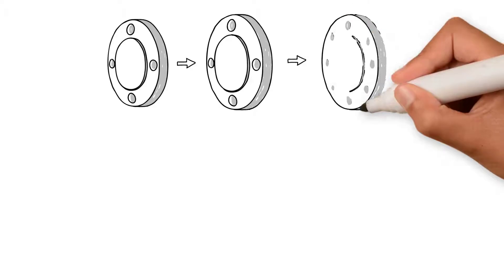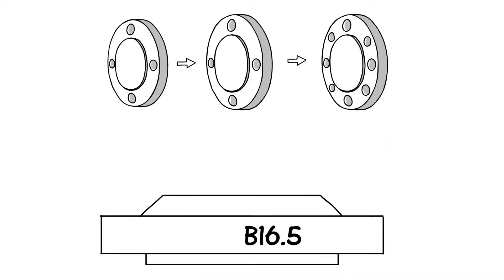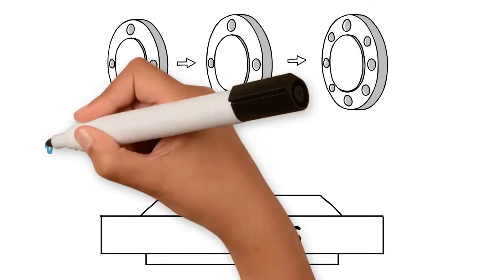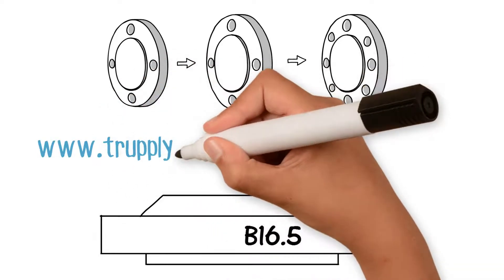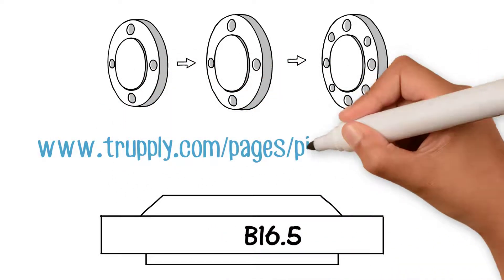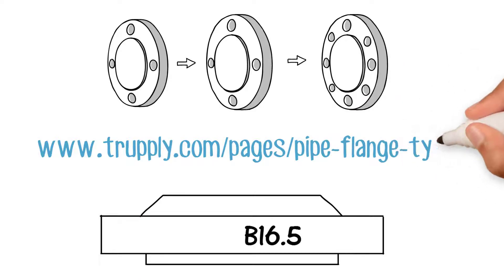Trapply sells all types of ANSI flanges online. Click on the link here for convenient online checkout: www.trapply.com/pages/pipe-flange-types.